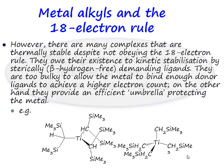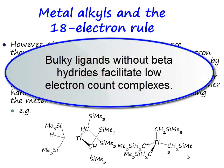So if you use a bulky enough alkyl ligand — and incidentally, neither of these have beta hydrogens, which is still very much a no-no in these systems — if you use a bulky enough ligand without beta hydrides, then you can produce these very electron-deficient metal alkyl complexes.